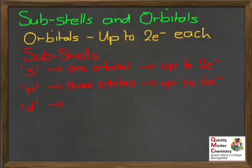Then we have the D subshell. You might start to see a pattern developing here. D subshell consists of 5 orbitals, and that means it can hold up to 10 electrons.